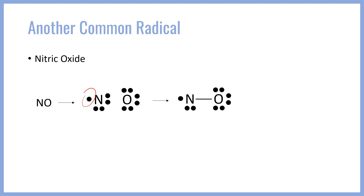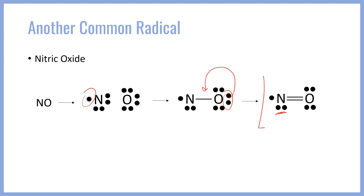Oxygen is now happy with an octet, but nitrogen is starved. So we fold in one of those oxygen pairs to give us a double bond. Nitrogen now has seven valence electrons, thanks to the four from the bonds and the lone pair, plus that one lone radical electron. Oxygen has a full octet, but there's nothing you can do to further combine them to make an octet for nitrogen. This is, in fact, the overall structure for the NO molecule.